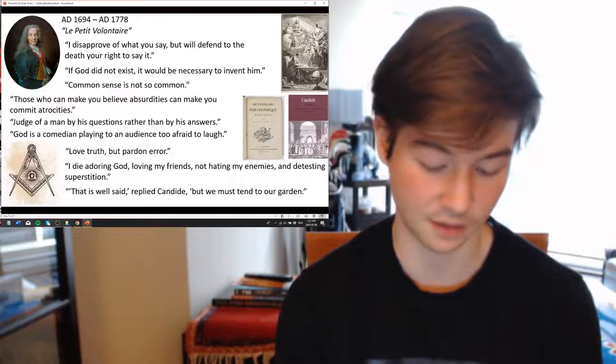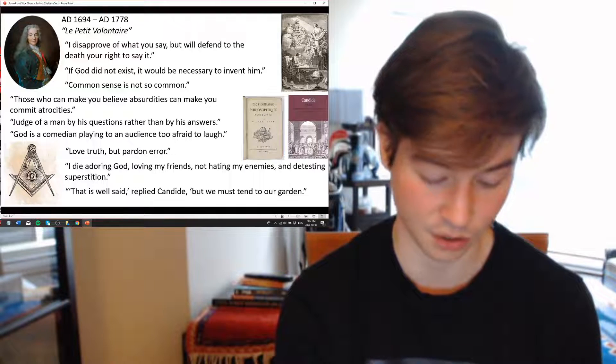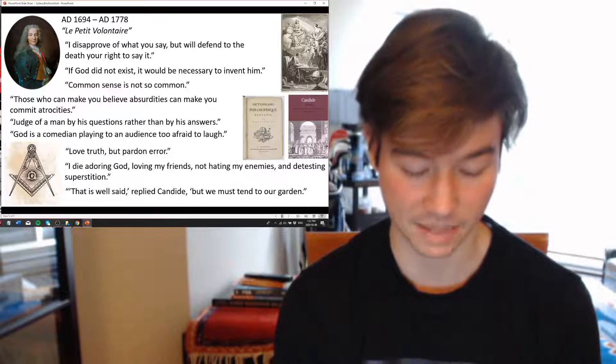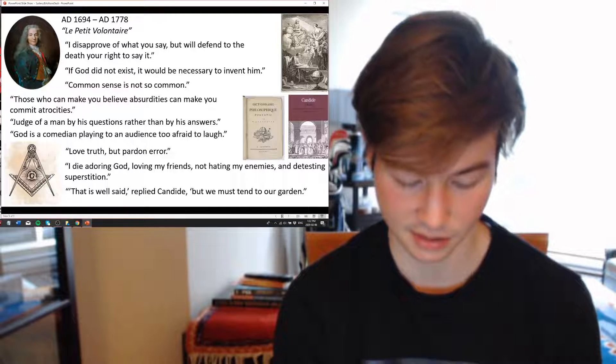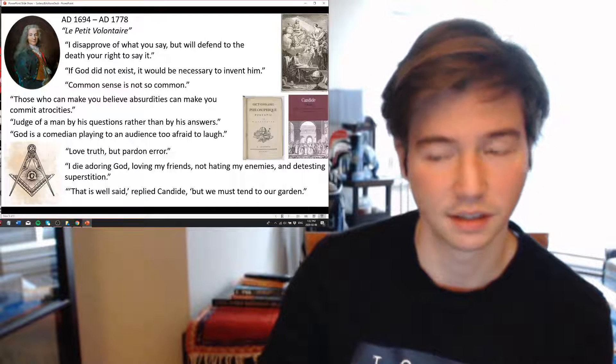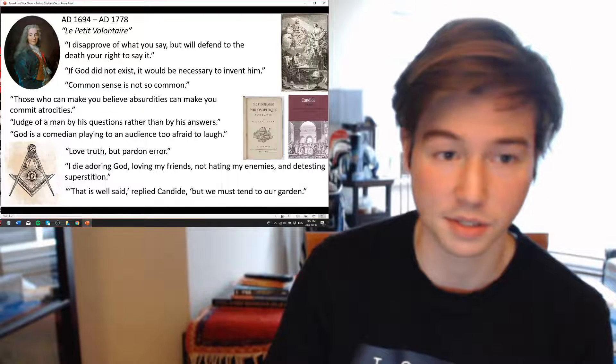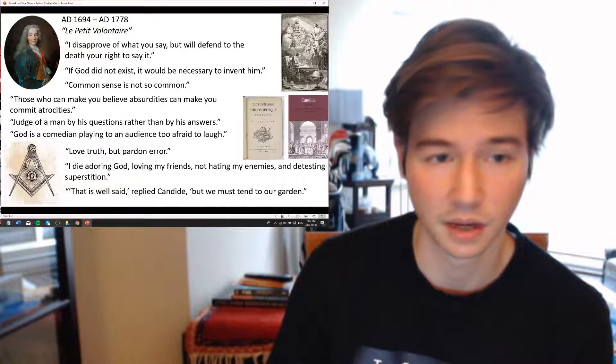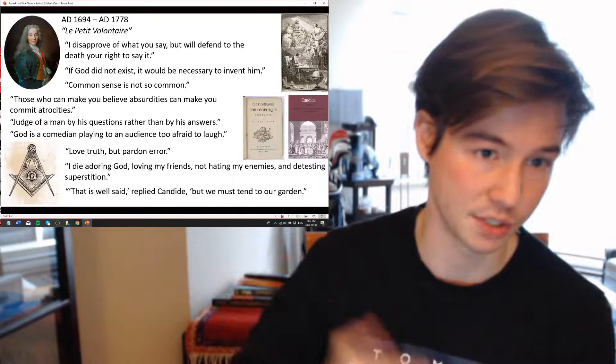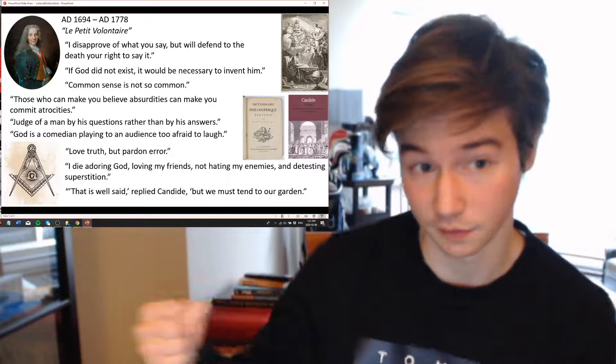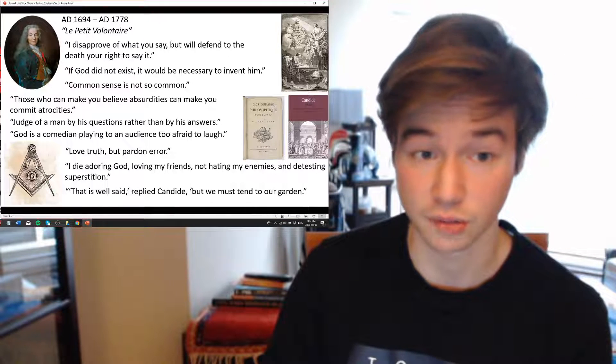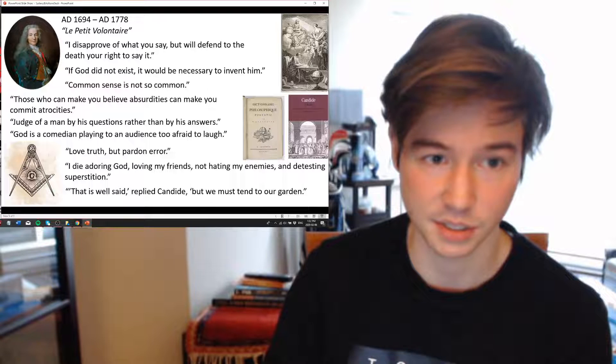In 1713, his father obtained a job for him as secretary to the new French ambassador in the Netherlands, Marquis de Chateauneuf, who was actually the brother of his father. So in the Hague, he fell in love with a woman named Catherine Olympe de Noyer, who he called Pimpette, who was a French Protestant. It alludes to his religious tolerance because she was a Protestant and he was a Catholic.